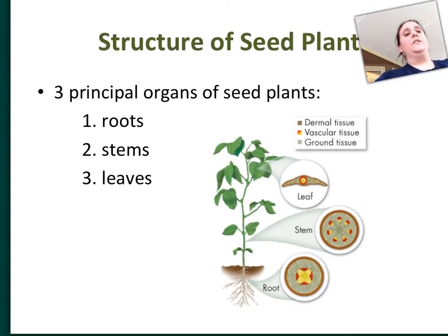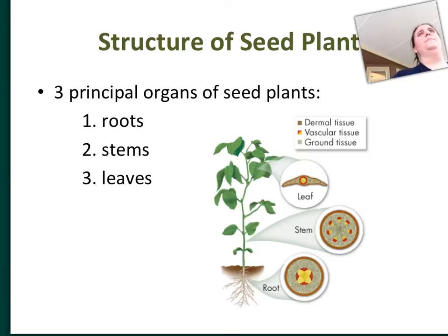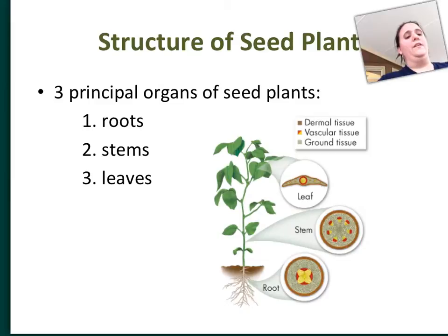So roots, stems, and leaves. Now we don't count flowers in that because not all plants have flowers. And not all plants have roots and stems either, but for the vascular plants — plants that are able to conduct water — things that are more evolutionarily advanced than algae and the bryophytes or mosses. So we're going to talk about the higher level plants.